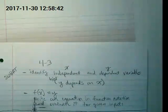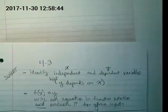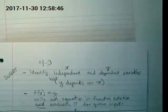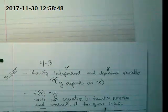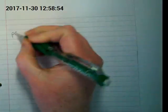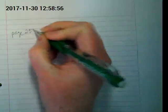Second is this function notation. We're going to write equations in function notation today and evaluate them for given inputs. We're just going to do some problems in the book together. So look on page 253 at number three. It's a table. Do you guys see it?